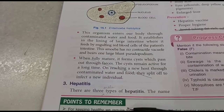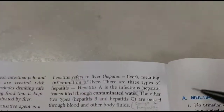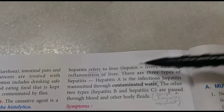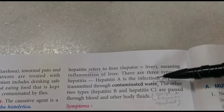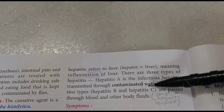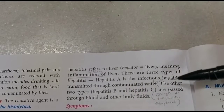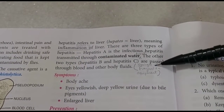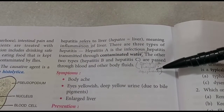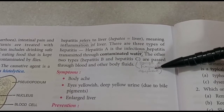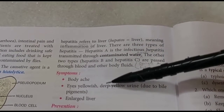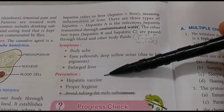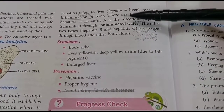Hepatitis means inflammation or swelling of the liver. There are three main types: Hepatitis A is highly infectious and transmitted through contaminated food and water. Hepatitis B and C are passed through blood and other body fluids, especially through syringes and transfusion equipment, which is why these should be disposed of after one-time use or thoroughly disinfected. Symptoms include body ache, yellow eyes, and yellow urine due to excess bile pigments, as well as an enlarged liver.